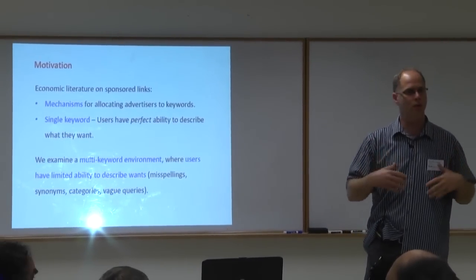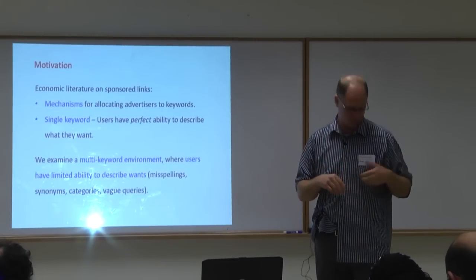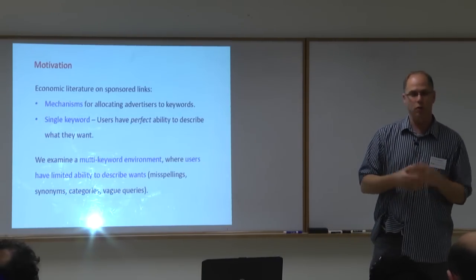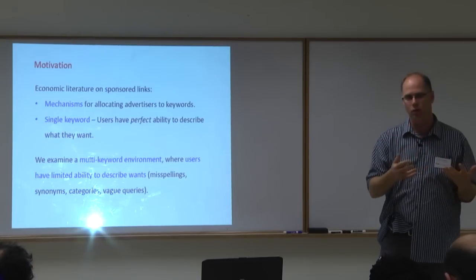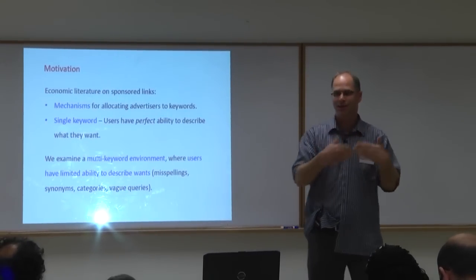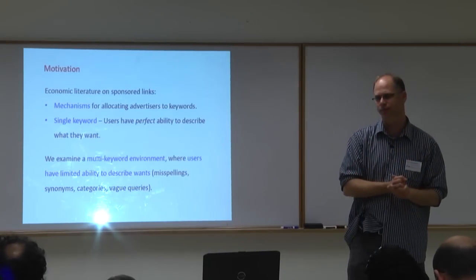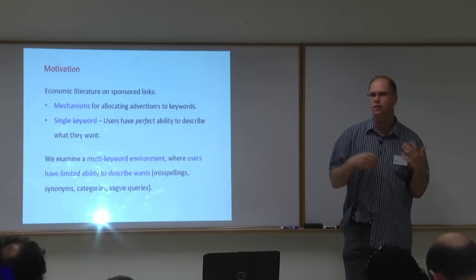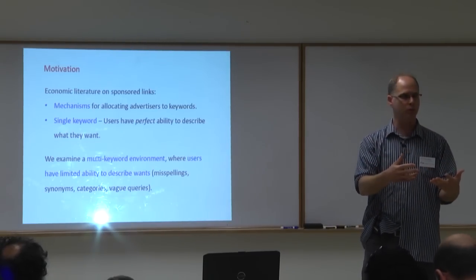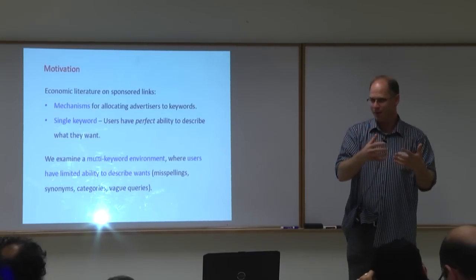There could be partial correlation between the words people use and what they actually want — for various reasons. There could be typos: for example, 'Ronspiegler' rather than 'Ranspiegler.' Or different people want different things but use the same query because they can only give a general description. They'll say 'classical music composer' without knowing what kind they want — some like Mozart, others like Bach — but they use the same word.